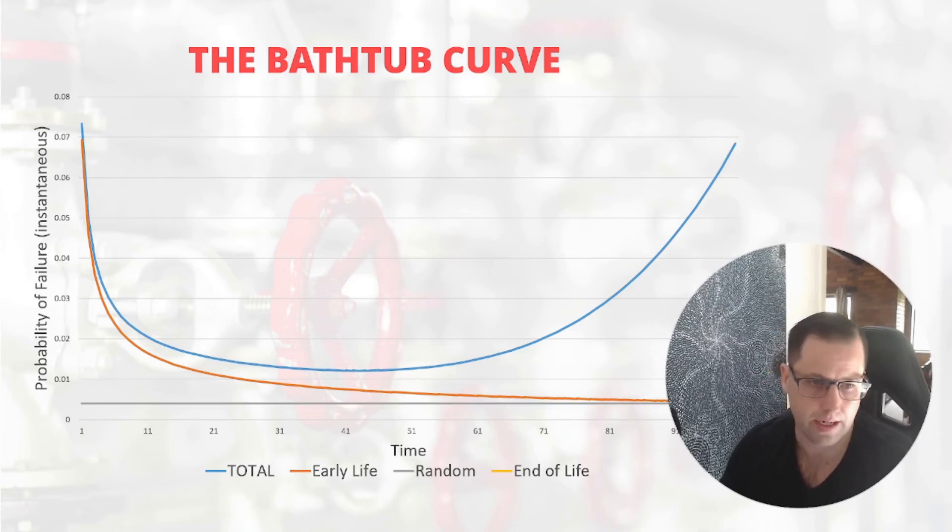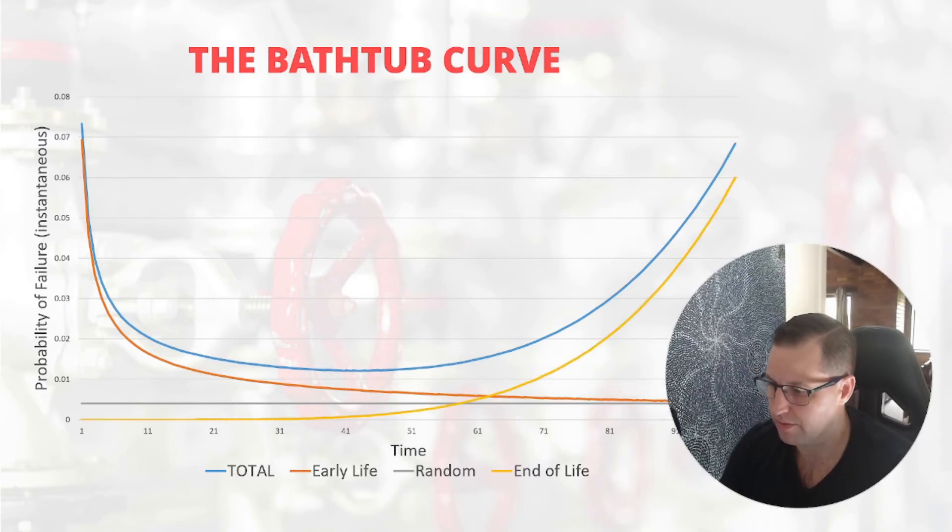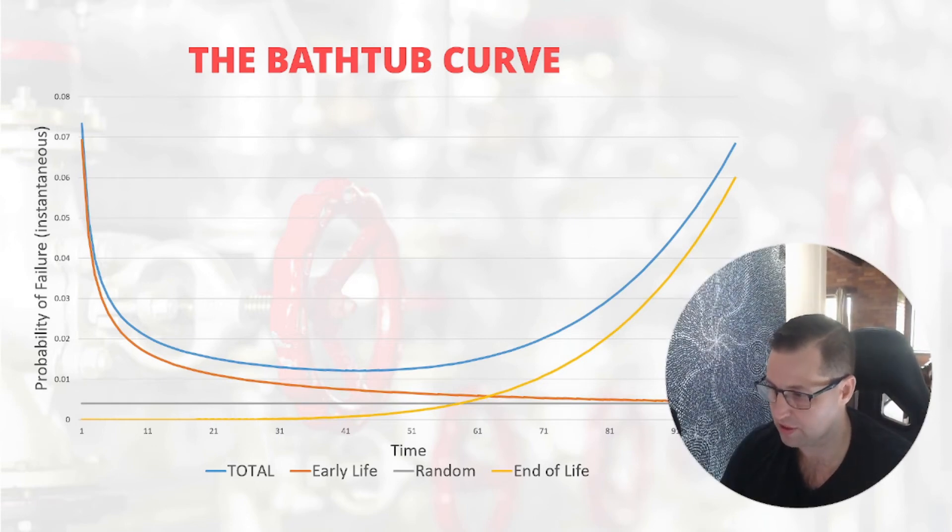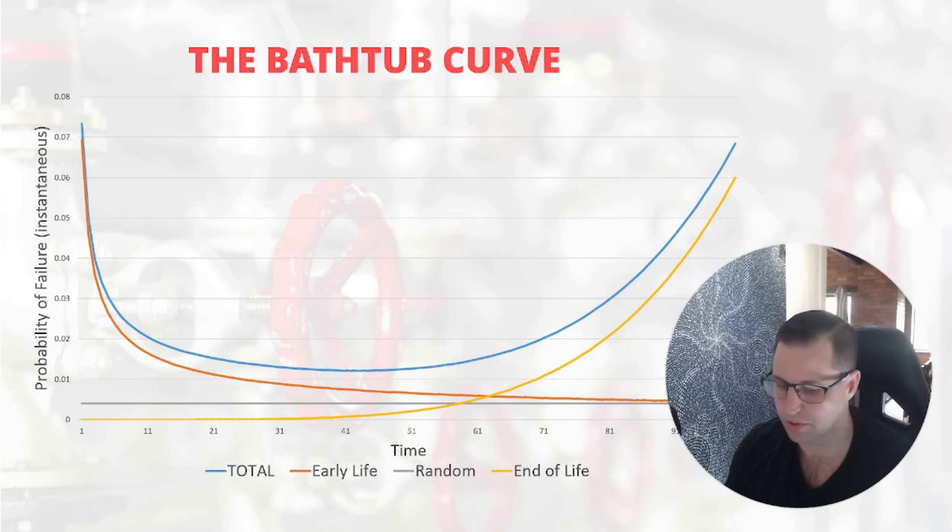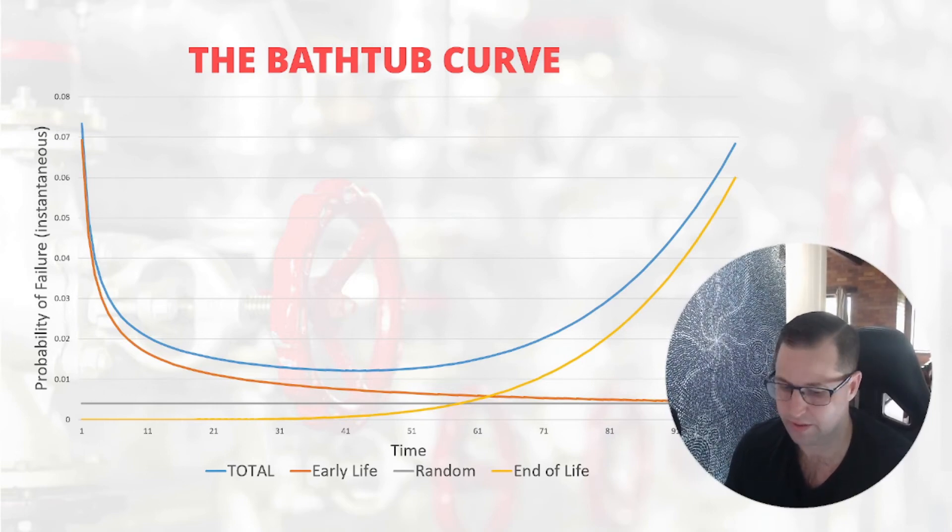We then have a random component described in gray here. And then lastly, the end of life or wearout type hazard function in yellow. They all aggregate up to the blue curve or the bathtub curve that you see here.